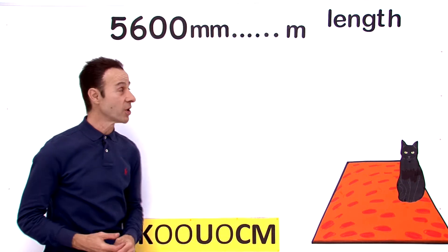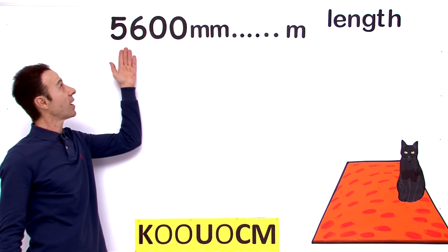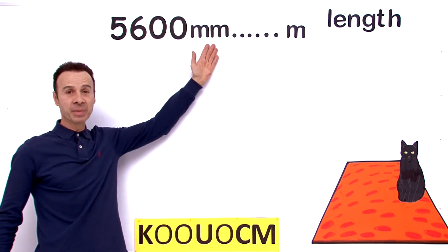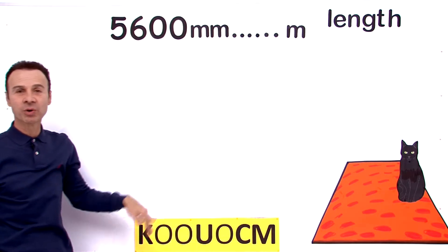Alright, let's find the unit conversion from millimeters to meters. What do we have? We have 5600 millimeters. We are going to change them into meters, so we are going to use this acronym.